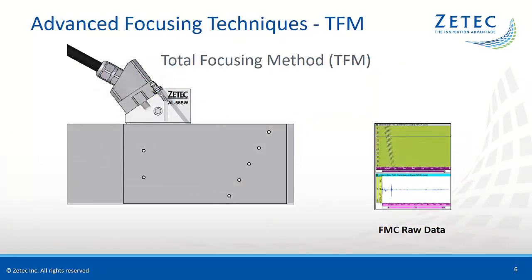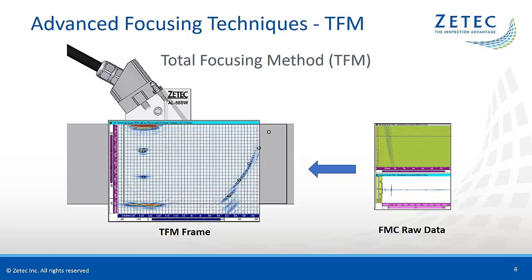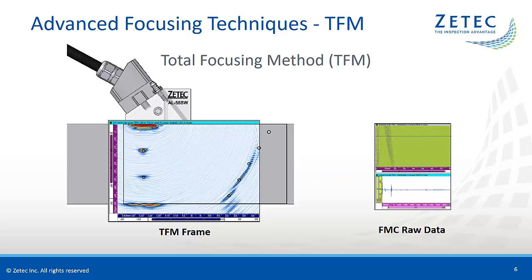The most commonly used advanced focusing algorithm is the Total Focusing Method, or TFM. The TFM algorithm sums the elementary A-scan signals from all elements in the array to generate a frame of pixels, where each pixel is computed using a dedicated focal law. The TFM frames can be used for live interpretation or they can be stored for each position of the probe, very similar to a dynamic merge view in regular phased array. In theory, ideal focusing is achieved in each point of the frame, but the focusing capability of the technique still depends on the acoustic wavelength and the total aperture of the array. Therefore, some conditions must be met to effectively obtain ideal focusing.